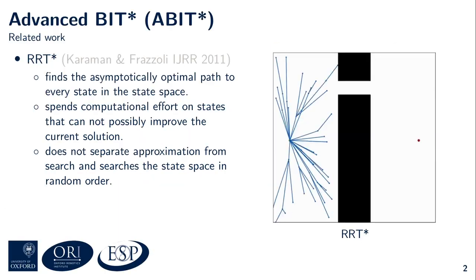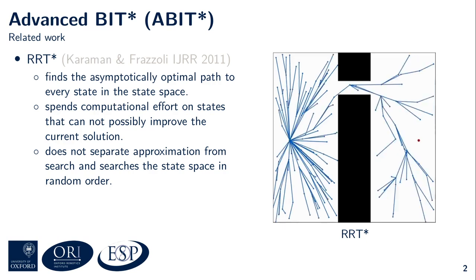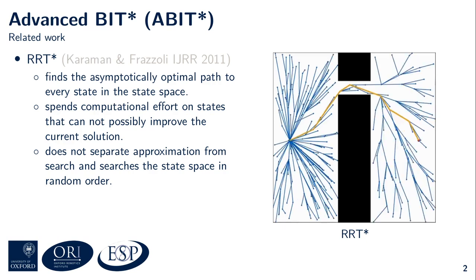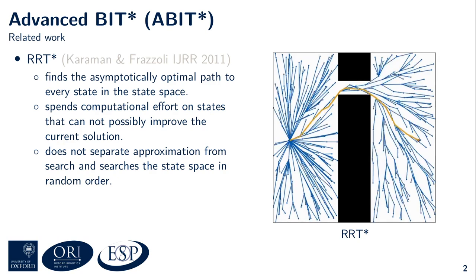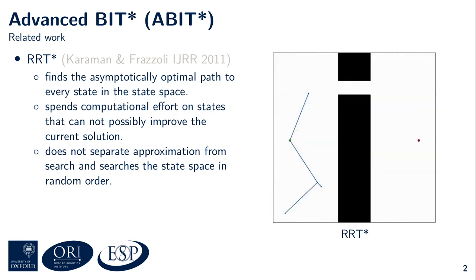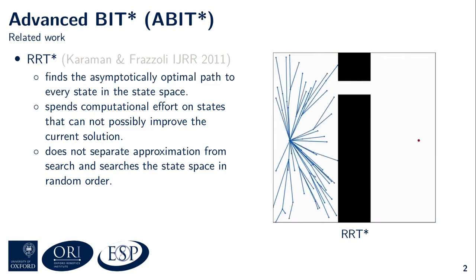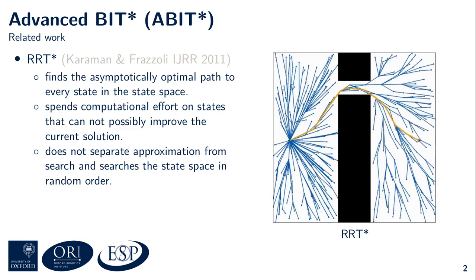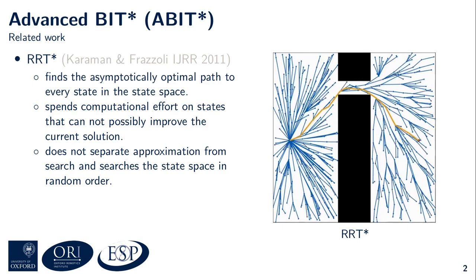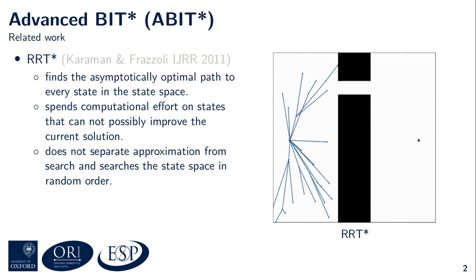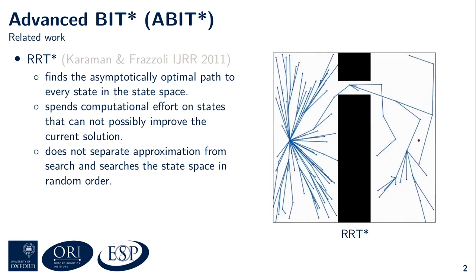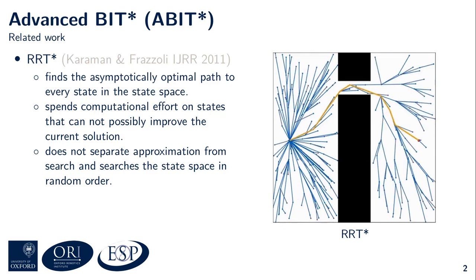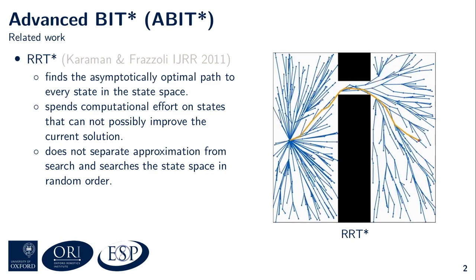I want to put BIT* in context by introducing RRT* first. RRT* is an almost surely asymptotically optimal path planning algorithm that has been successfully applied to many systems. You can see how it solves a narrow passage problem on the right-hand side of this slide. RRT* almost surely finds an asymptotically optimal path to every state in the state space. This means that once RRT* has found an initial solution, it continues to spend computational effort on regions of the state space that cannot possibly improve its current solution, such as the bottom right corner in the example on the right. RRT* does not separate the approximation of the state space from the search of the state space, and therefore searches the state space in random order because every random sample is immediately connected to the search tree.